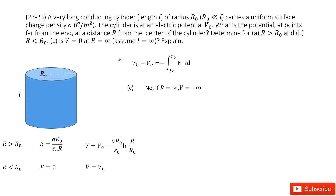The third part asks whether V equals zero at r equal to infinity. Looking at our outside function and letting r go to infinity — since r must be larger than r₀ — we can see the potential does not go to zero; it actually becomes negative infinity.